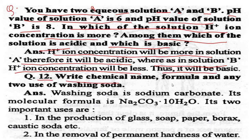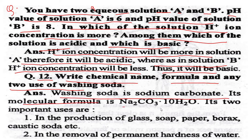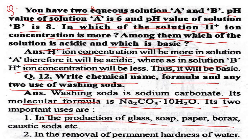Question No. 12. Write the chemical name, formula, and any two uses of washing soda. Washing soda is Sodium Carbonate, molecular formula Na2CO3·10H2O. Uses: first, in the production of glass, soap, paper, borax, and plastic; second, in the removal of permanent hardness of water.